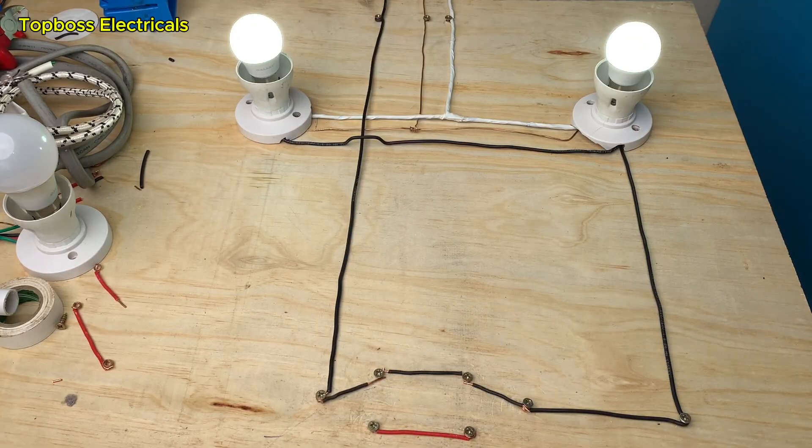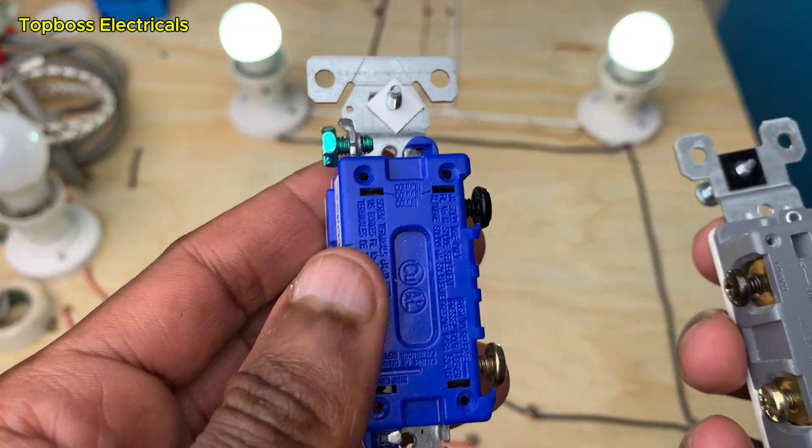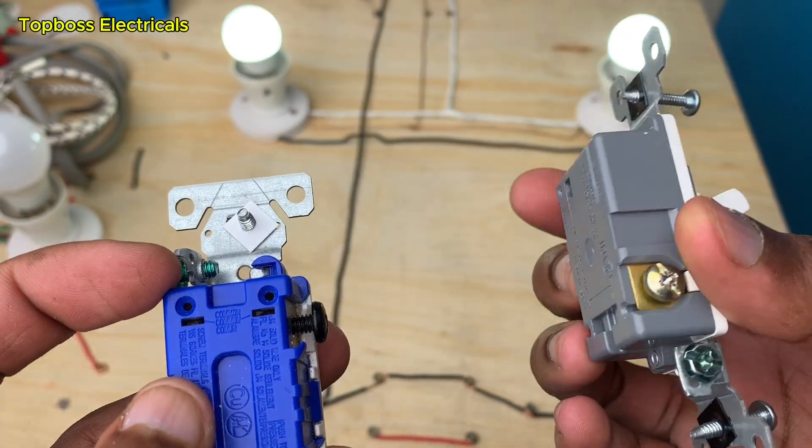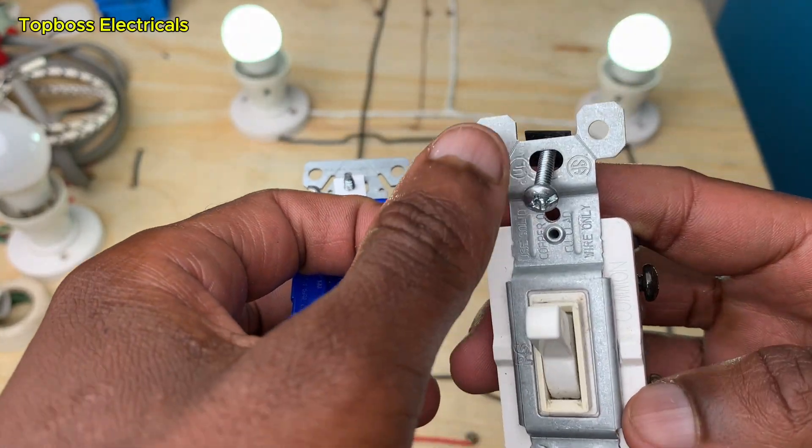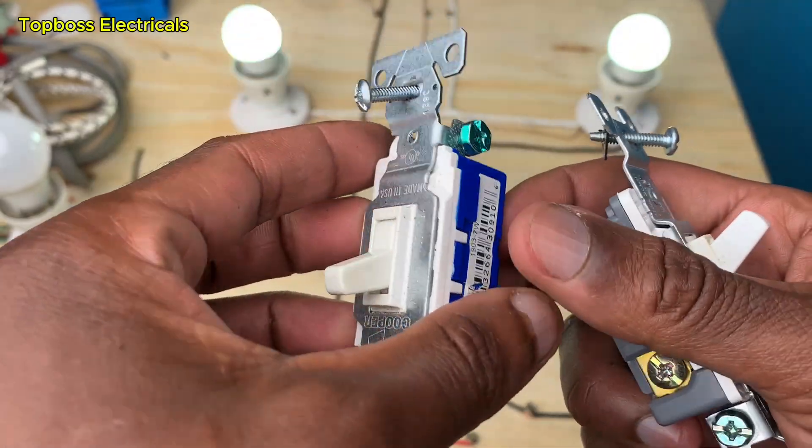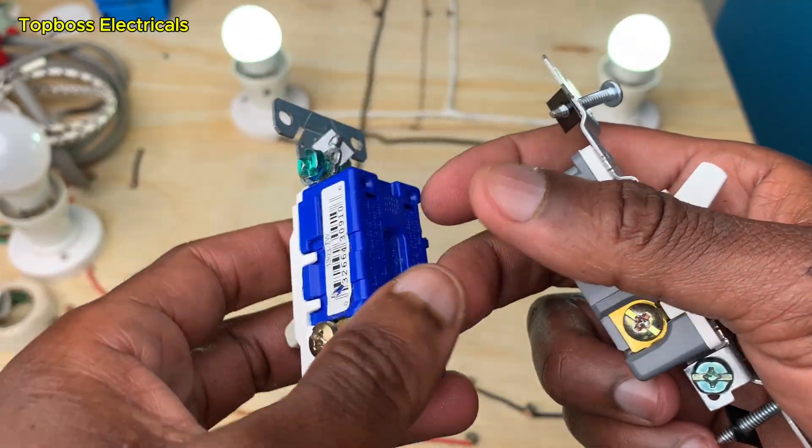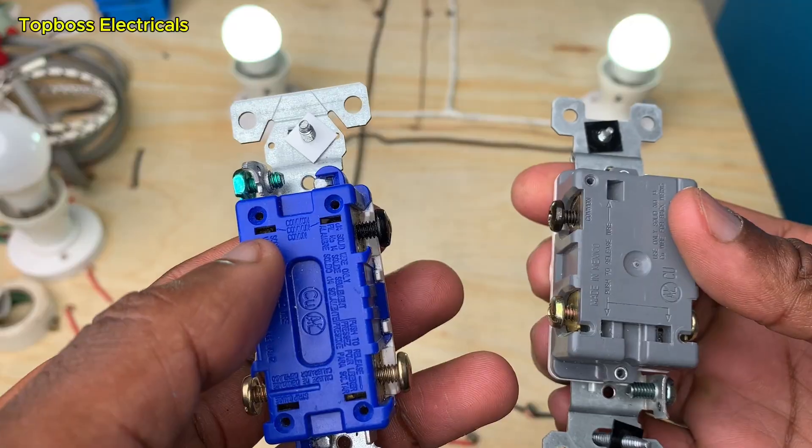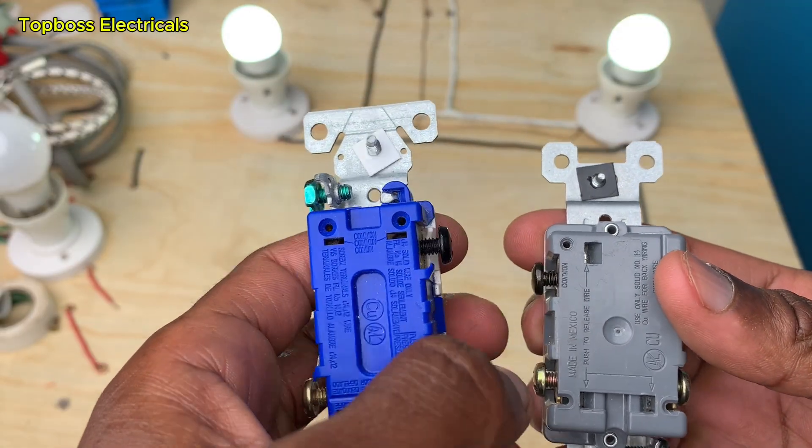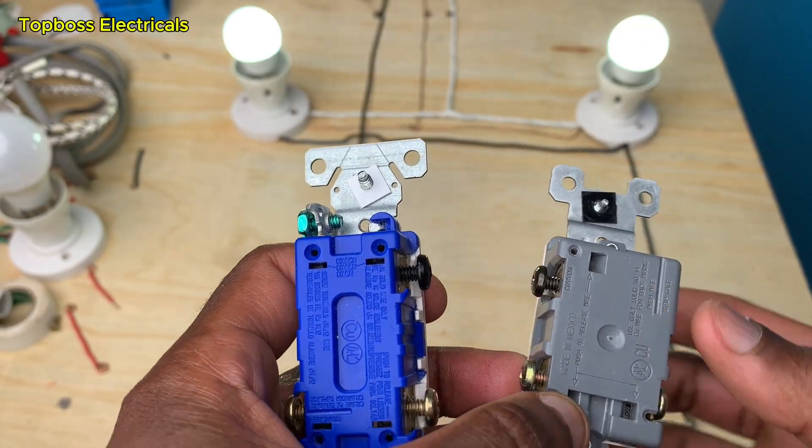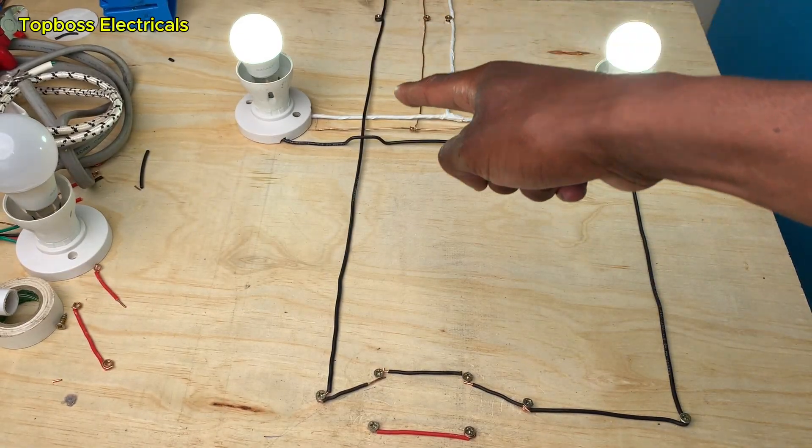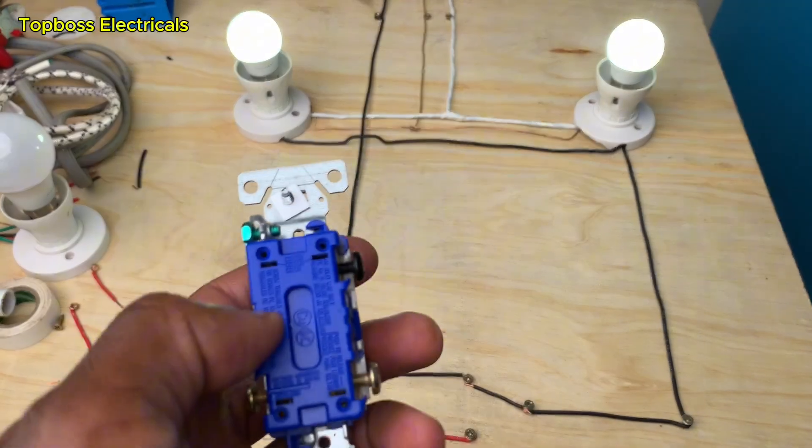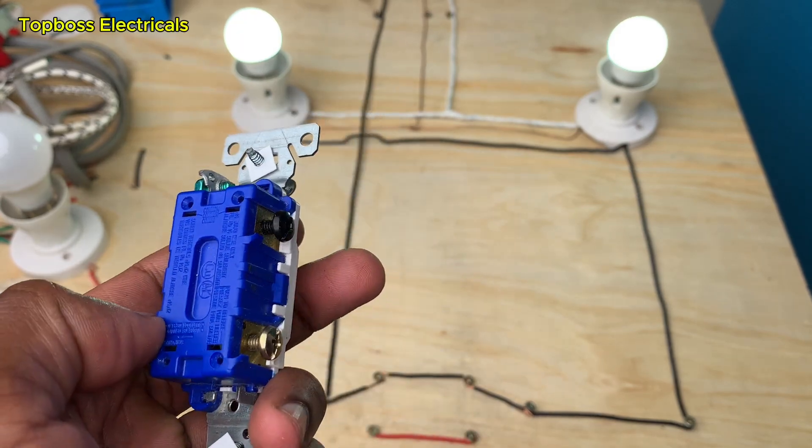We'll have the ground wire connected here, and you can see that the ground wire is in touch with the entire metallic part of the switch. Then we have the common, which is very important for our case. The common for this switch comes all the way from the feed and gets to the common of this switch right here.